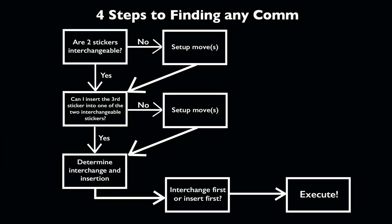Finding comms can be hard, so here is a simple four-step process to find any comm. First, ask yourself: are two stickers interchangeable? If not, you need setup moves. Second, ask: can I insert the third sticker into one of the two interchangeable stickers? If not, you need more setup moves. Third, after you have a pure commutator, determine the interchange move and the insertion moves. Finally, determine whether to interchange first or insert first by asking where the piece outside of the interchange needs to go first. Then you can execute the comm.